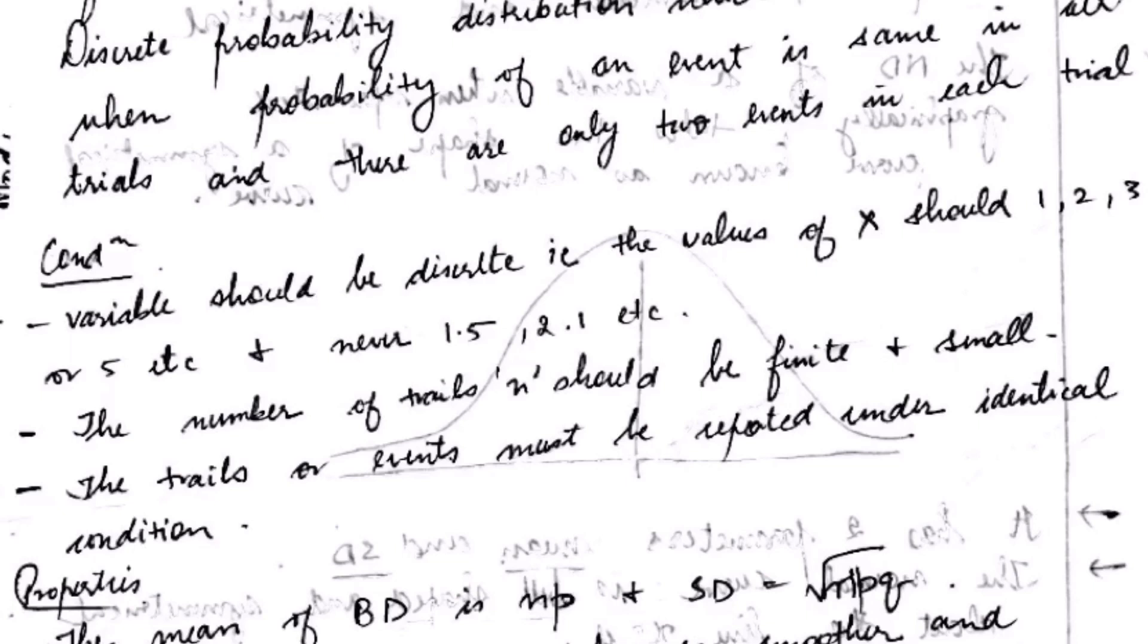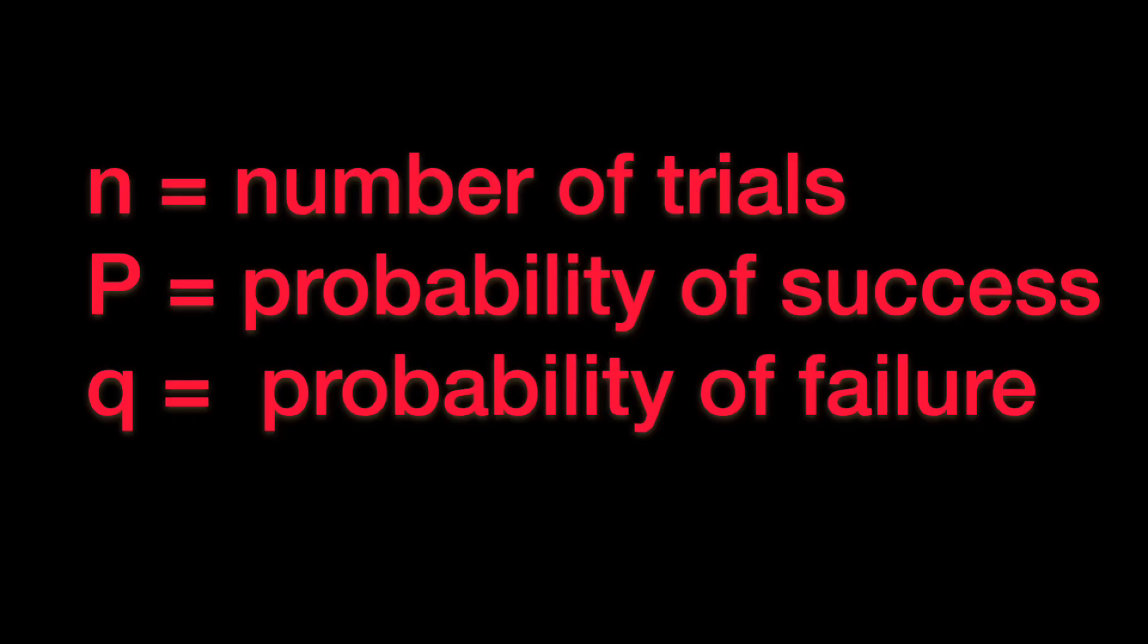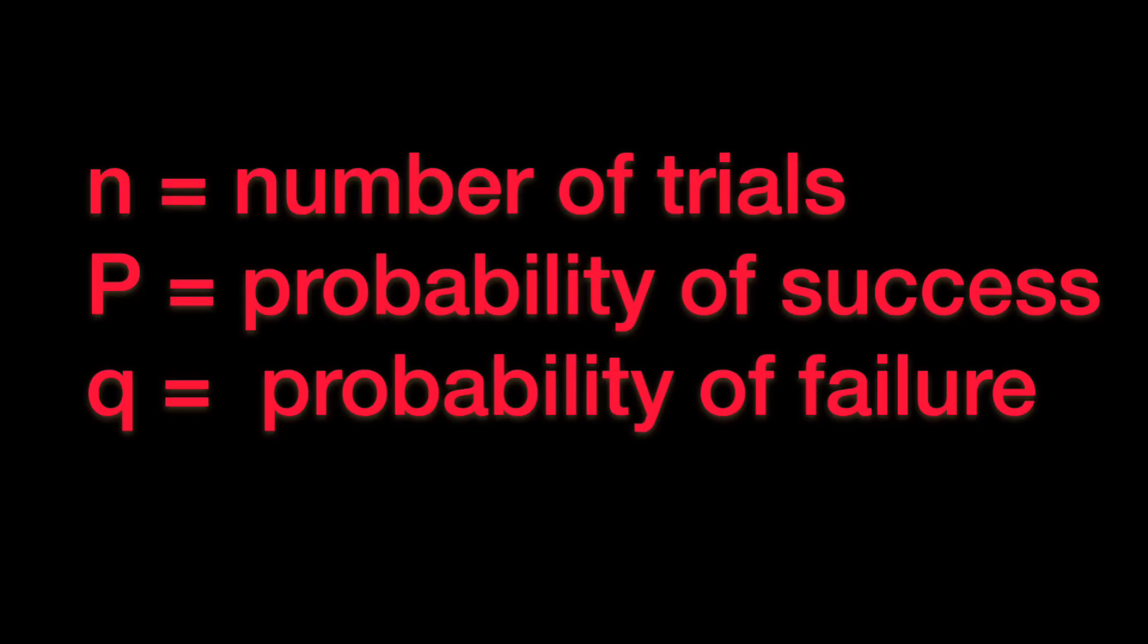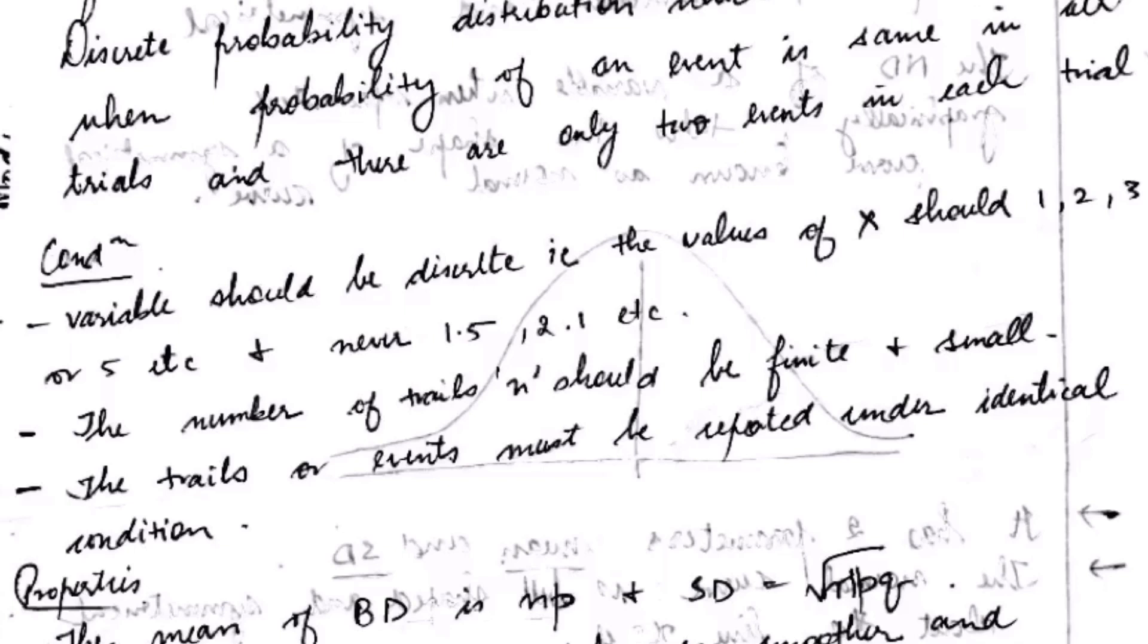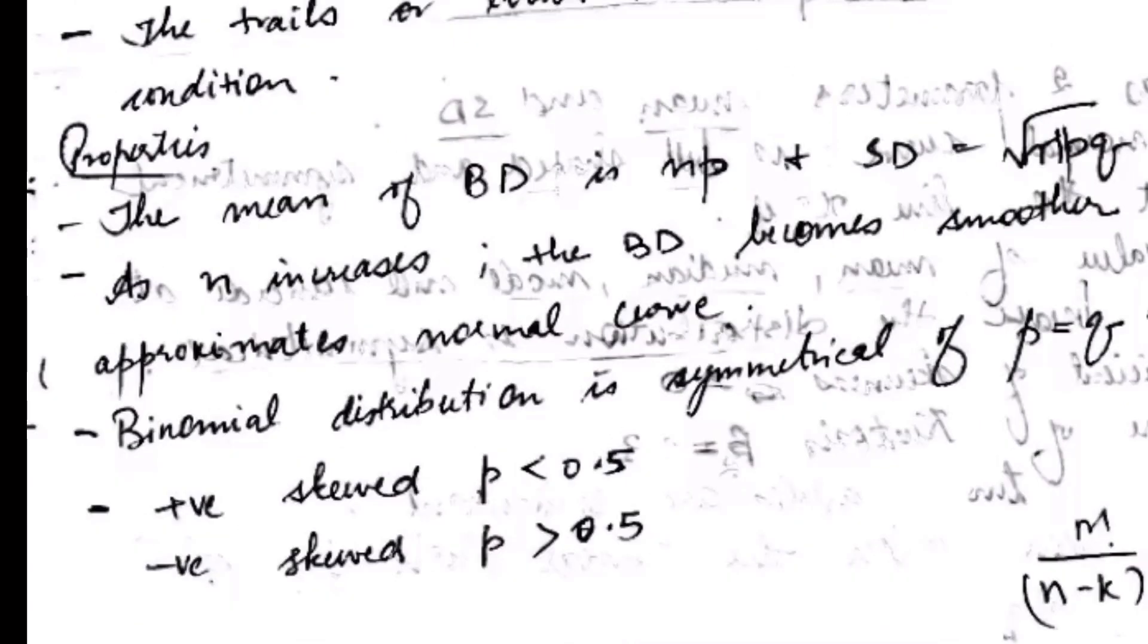Now we will look at the properties which says the mean of binomial distribution is np whereas for standard deviation it is square root of npq. And as n increases, the binomial distribution becomes smoother and approximates to the normal curve. Binomial distribution is symmetrical when p equals q, that is 0.5. If p is less than 0.5 then it is positively skewed, and if p is greater than 0.5 it is negatively skewed.